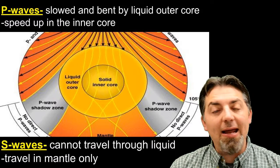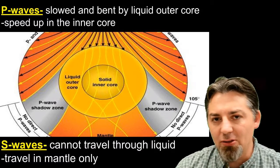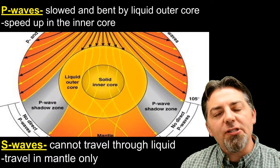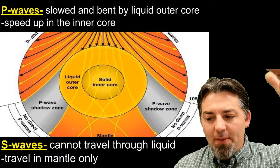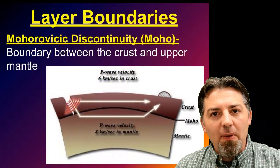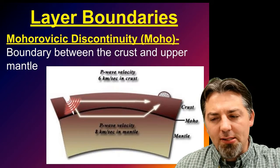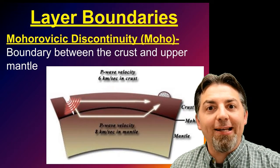S waves, again, cannot travel through liquids. They travel through solids only. So they travel through the mantle only. Now, also one of the neat things is by looking at how those seismic waves travel, we find that there's a difference between the crust and the mantle. That boundary line between the crust and the upper mantle has a special name. It's called the Mohorovicic discontinuity.